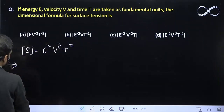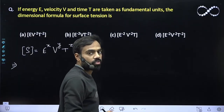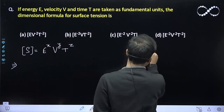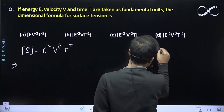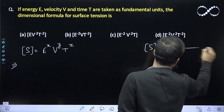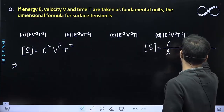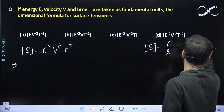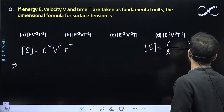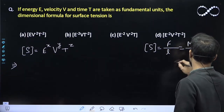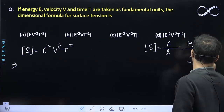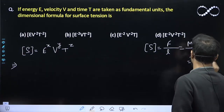As you all know, the surface tension is nothing but force per unit length. So the dimension of surface tension is force upon L. Force is equal to MLT raised to power minus 2, and L is equal to L. The L's cancel out, giving us MT raised to power minus 2.